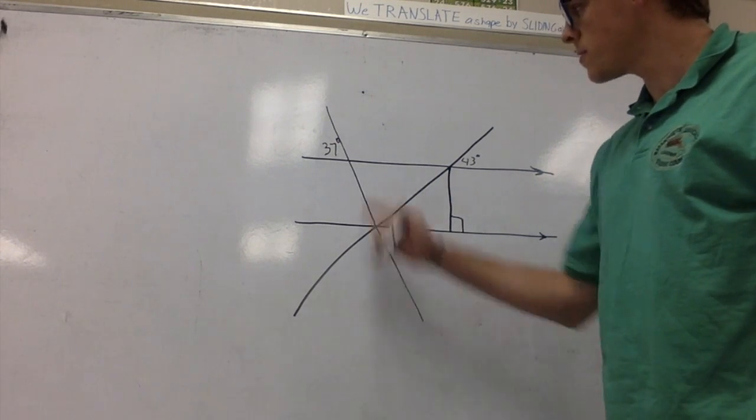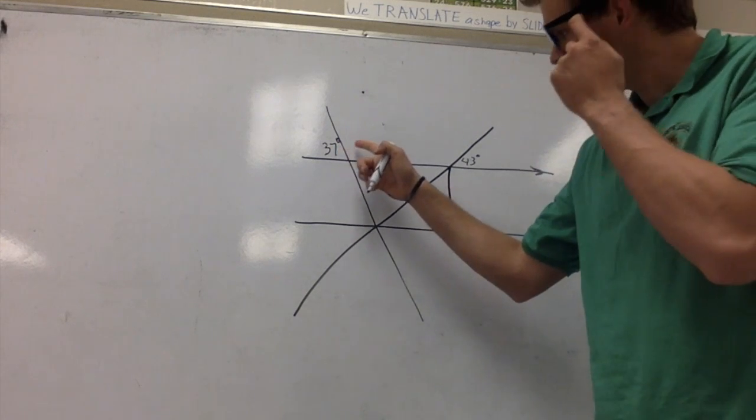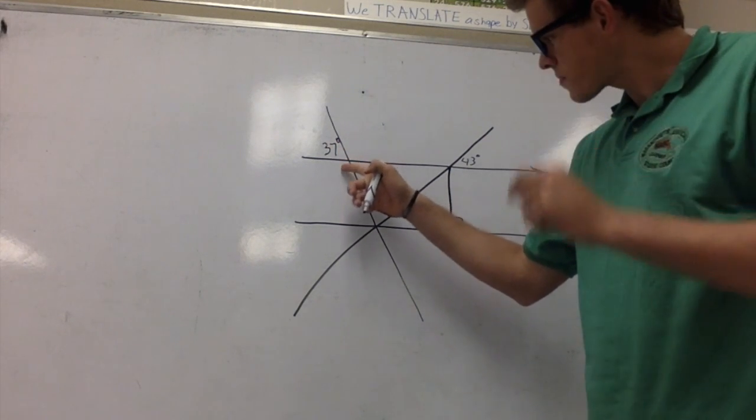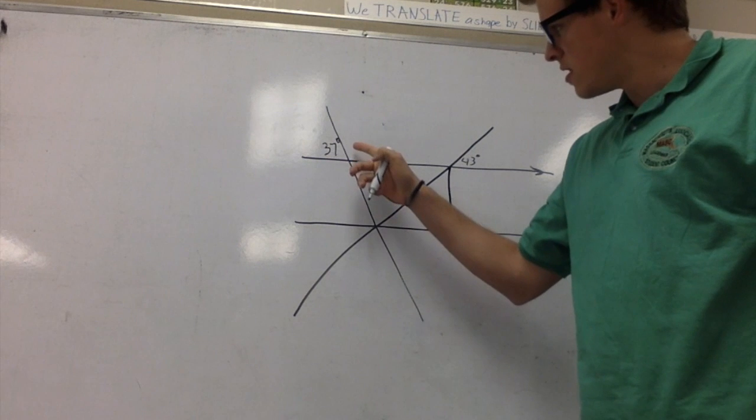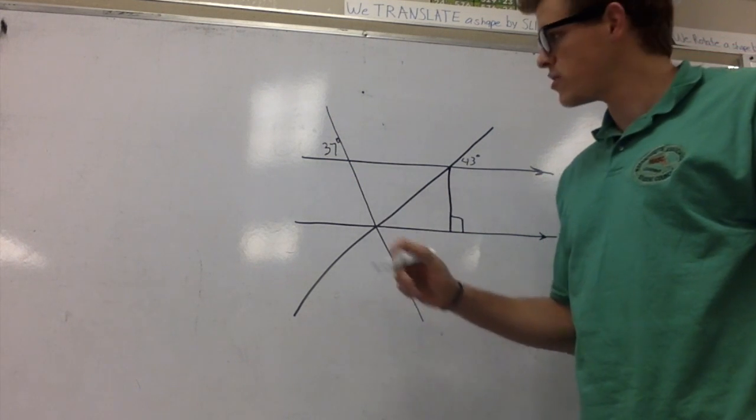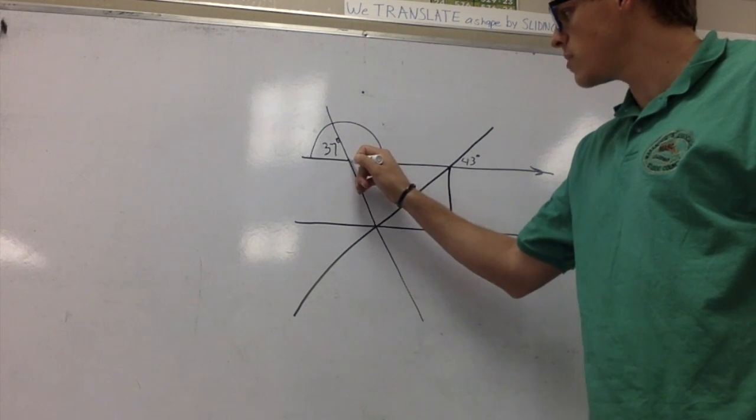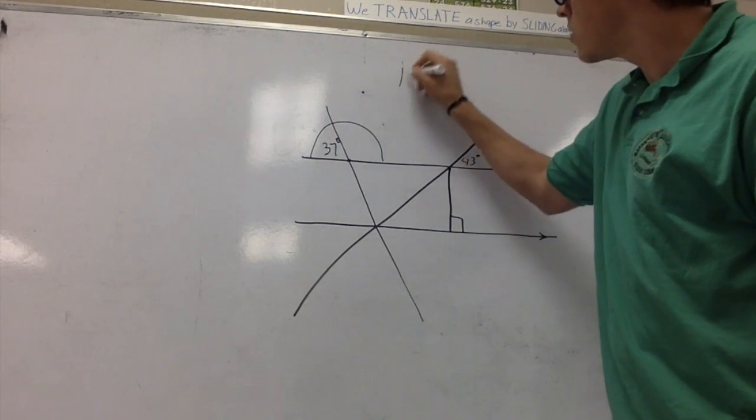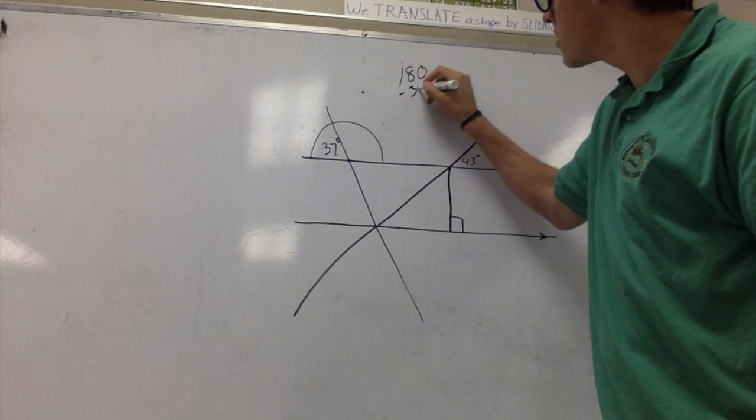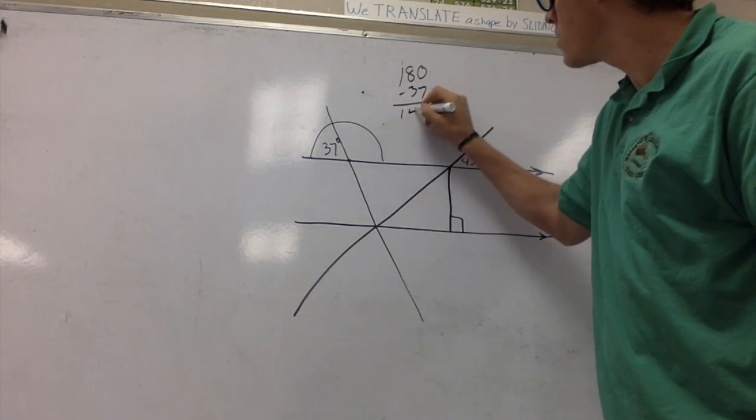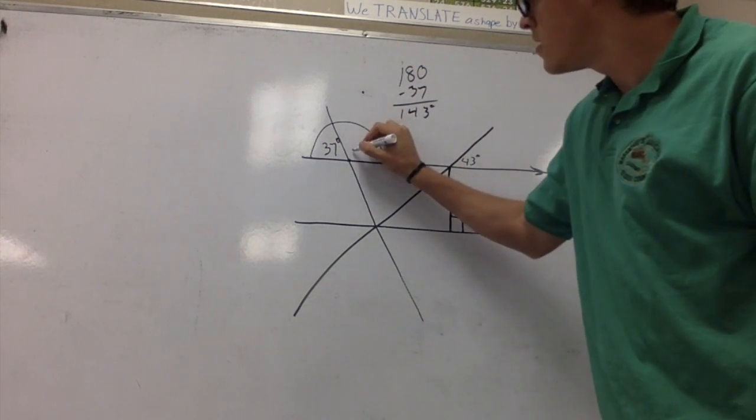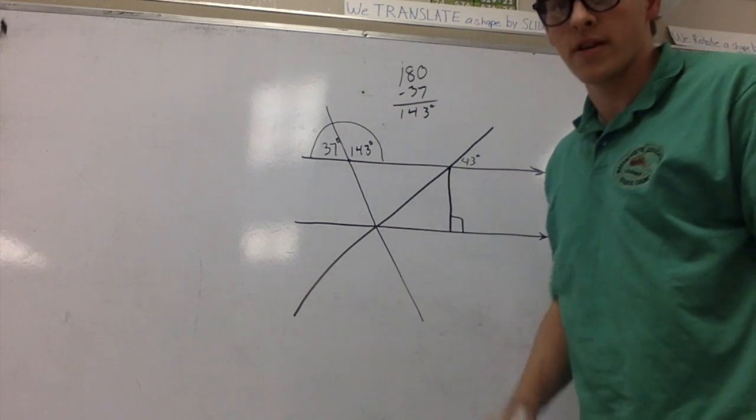I'm going to start up here, top left. Right here I have a vertex, using a complementary angle relationship. I can see that right here, this is going to be 180 degrees. So 180 minus 37 leaves me with 143 degrees. This right here is 143 degrees.